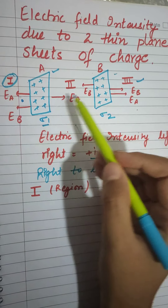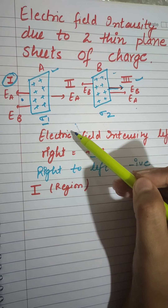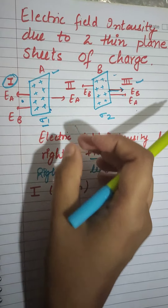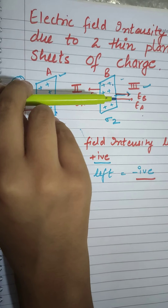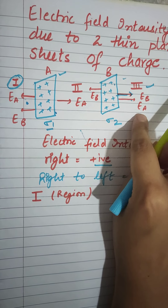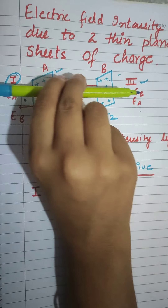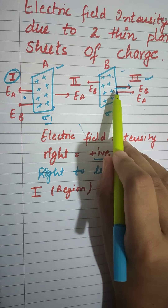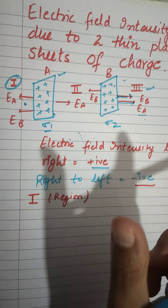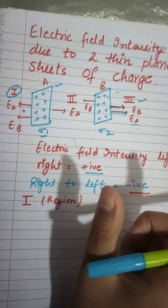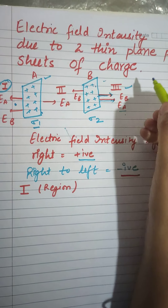In the third region, B will repel — so the electric field from B is away from sheet B — and the field from A is also away from sheet A. So in region 3 both electric fields point in the same direction, toward the right. I assumed that the direction left to right is the positive direction for electric field intensity.